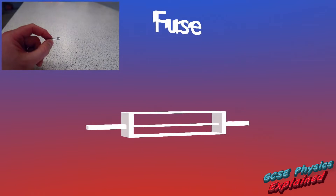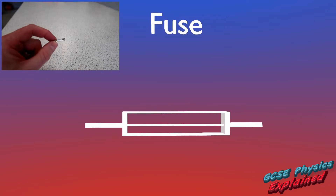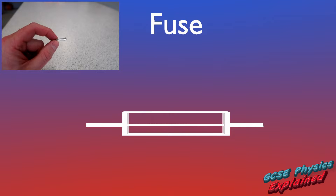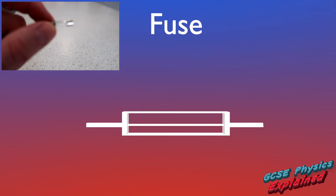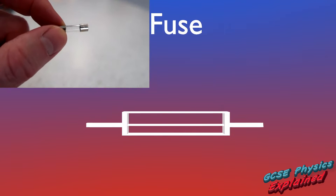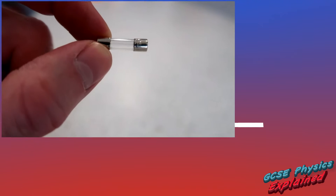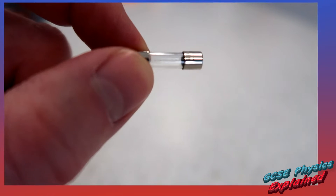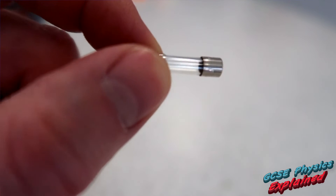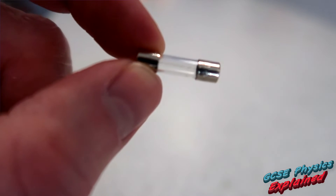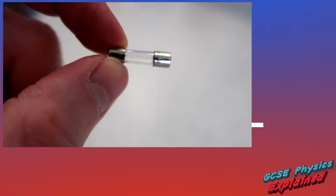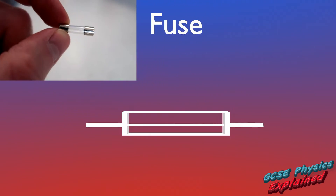The fuse causes a break in a circuit if an electrical appliance becomes faulty and causes too much current to flow. The fuse is a thin wire inside a small glass casing, so the symbol is quite similar looking.